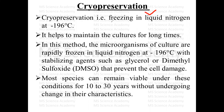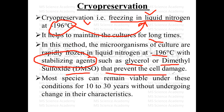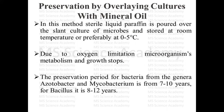Cryopreservation long duration method hai — haara culture kariban 10 se 30 saal tak preserved ho sakta hai. Isme cell suspension ko liquid nitrogen mein, jiska temperature kariban minus 196 degree Celsius hota hai, store karte hain. Sath mein stabilizing agents bhi daalne padte hain jaise glycerol aur dimethyl sulfoxide yaani DMSO — taaki itne kam temperature par cell damage na ho. Refrigeration ke comparison mein yeh bahut long duration ke liye appropriate method hai.